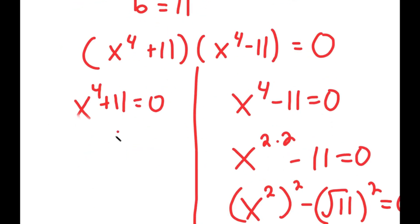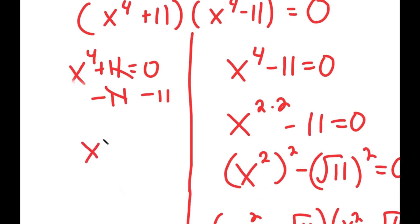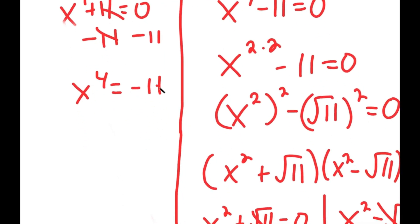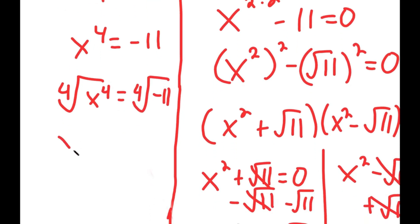Going back to x to the power of 4 plus 11 equals 0: I subtract 11 on both sides to get x to the power of 4 equals negative 11. Taking the fourth root on both sides, x equals positive or negative the fourth root of negative 11.